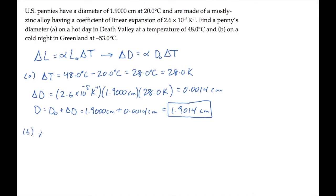In part B, the penny is taken to Greenland, where on a cold night, the temperature drops to minus 53 degrees Celsius. So the temperature change from the reference of 20 is negative 73 Celsius degrees, which is negative 73 Kelvin.